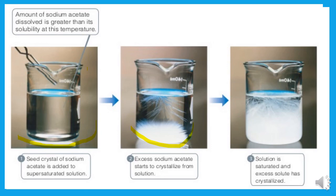Now, suppose we let the sodium acetate start to crystallize. If we add something to it — even a small amount of solute — the extra solute will become crystal form. Like here, sodium acetate is in crystal form. Crystals will continue to form on the bottom of the container until the normal level of saturation is reached. The solution becomes saturated and the excess solute has crystallized.